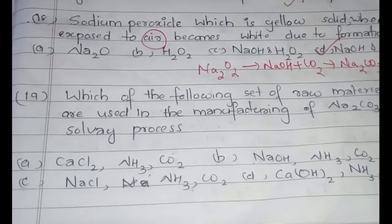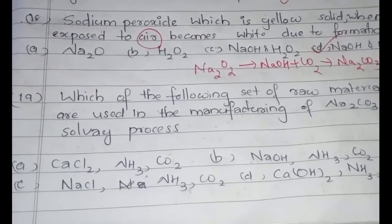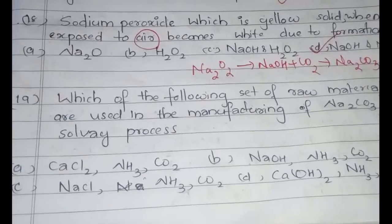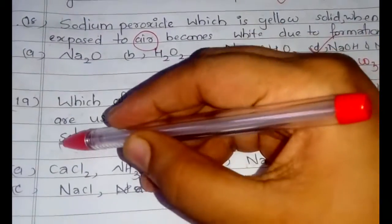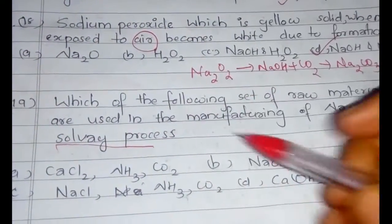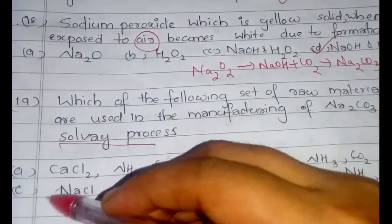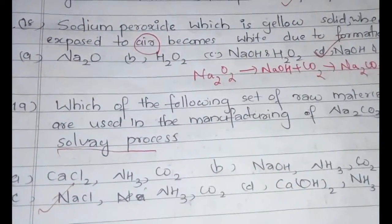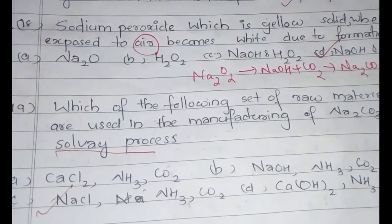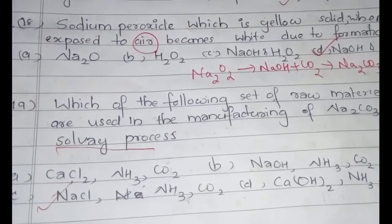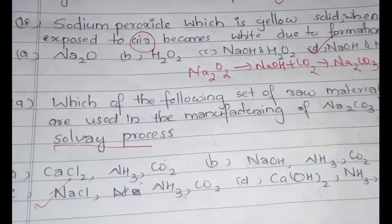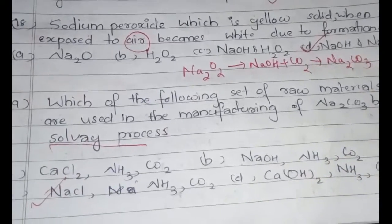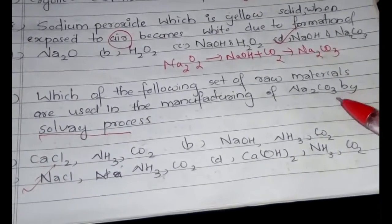The next question: which set of raw materials is used in manufacturing Na₂CO₃ by the Solvay process? The Solvay process is extremely important. The raw materials are NaCl, NH₃, and CO₂, and these result in the formation of Na₂CO₃.